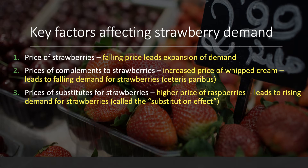What about substitutes for strawberries? For example, if the price of raspberries goes up — perhaps the price of raspberry jam goes up — that could lead to people switching away from raspberries and shifting their demand to strawberry jam instead. If raspberries are substitutes for strawberries and the price of raspberries goes up, there will be a substitution effect: some consumers will tend to switch their demand away from raspberries towards strawberries.